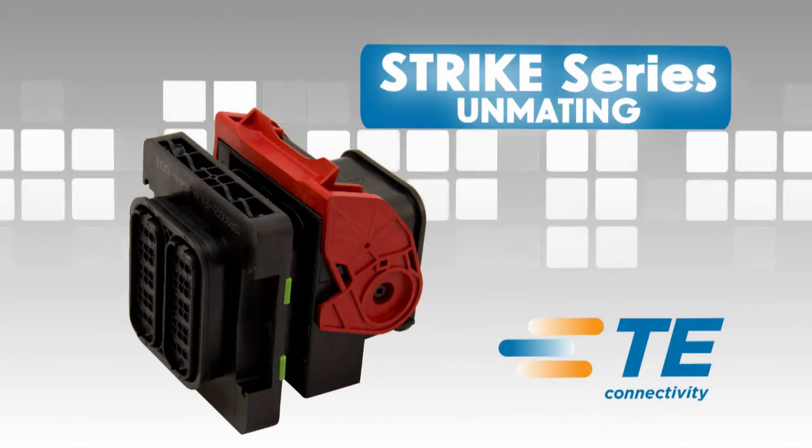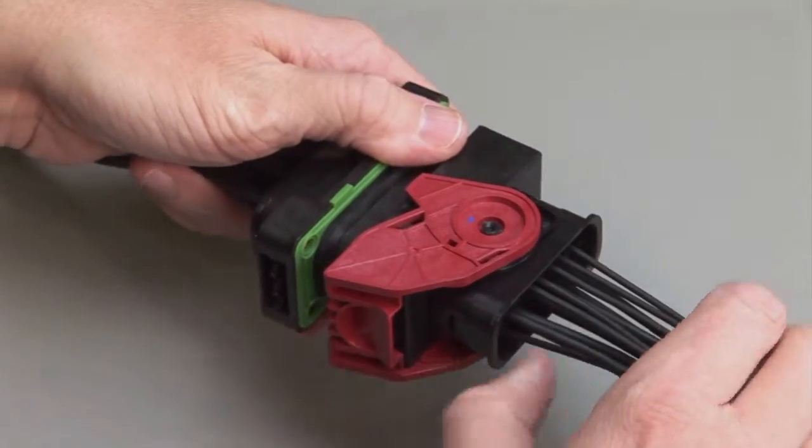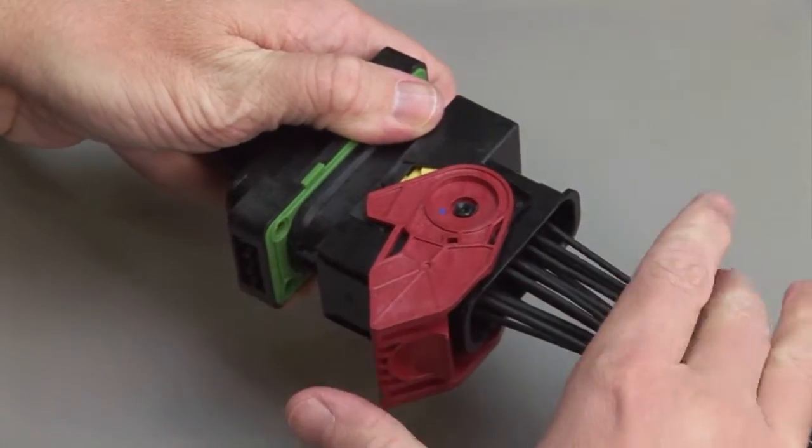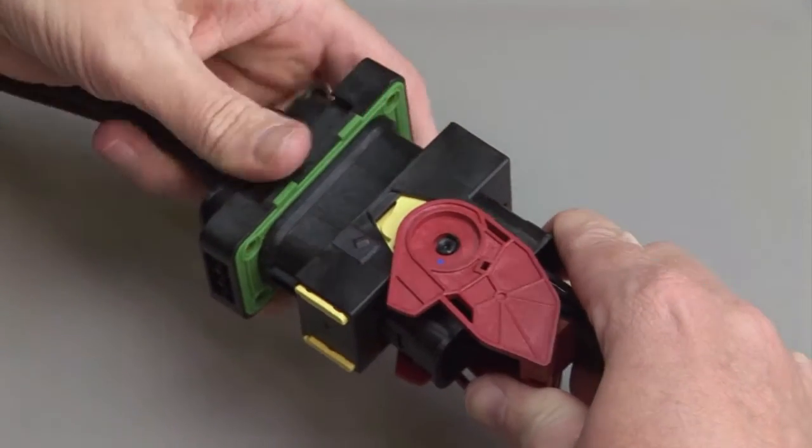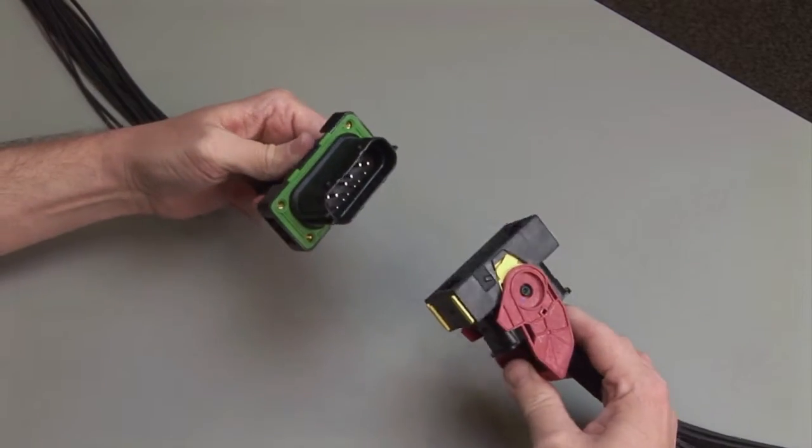Strike Unmating. To unmate the strike series connectors, grasp the lever lock on the plug and pull up until it unmates from the receptacle.